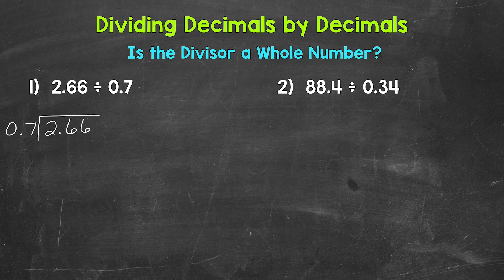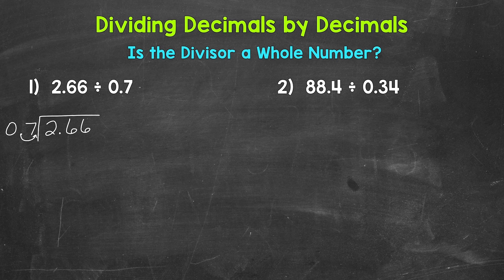Now whenever we have a division problem that involves decimals, we always need to check: is the divisor a whole number? Well, 7 tenths is our divisor — that's not a whole number, so we need to make it a whole number. We can do this by moving the decimal once to the right, which will give us a whole 7. Technically, we multiply our divisor by a power of 10. In this case that power of 10 was 10, so we multiplied 7 tenths by 10. This shifts the digits of our divisor to the left and gives us a whole number.